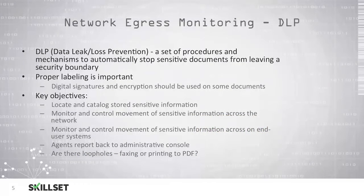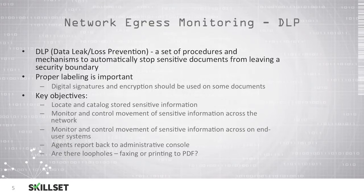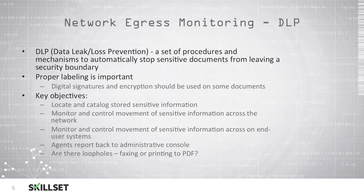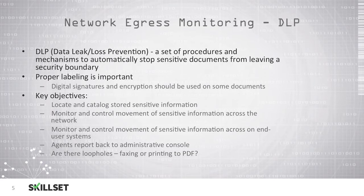Data leak or data loss prevention systems, or DLP, use a set of procedures and mechanisms to automatically stop your sensitive data from leaving your security boundary. These systems will help you to provide network egress monitoring. In order for these systems to work properly, it is important that all your sensitive data is properly labeled. You can use digital signatures and encryption to protect your most important documents. In order for your DLP system to function properly, you would locate and catalog all of your sensitive information on your system.